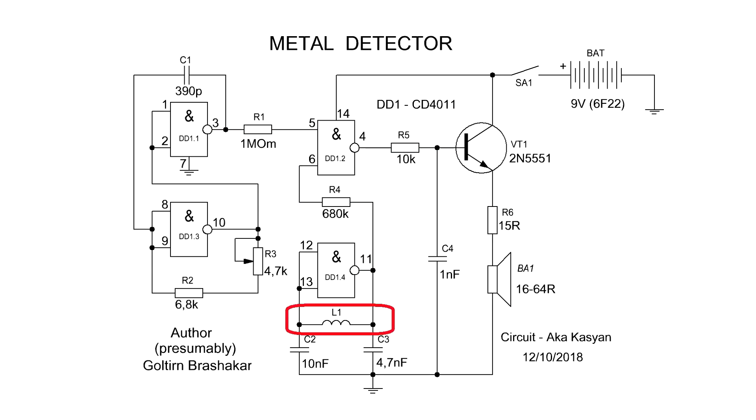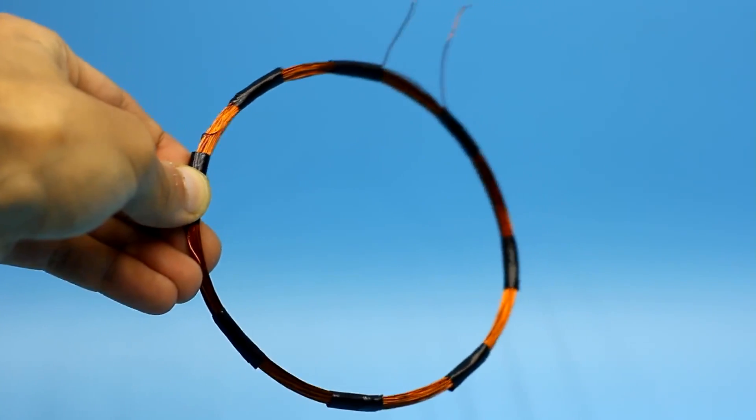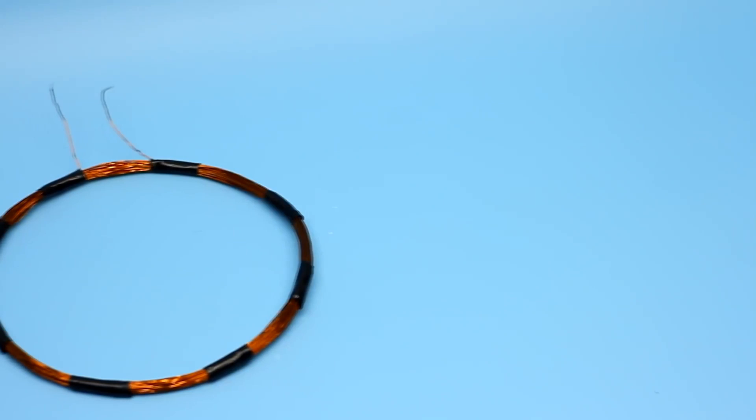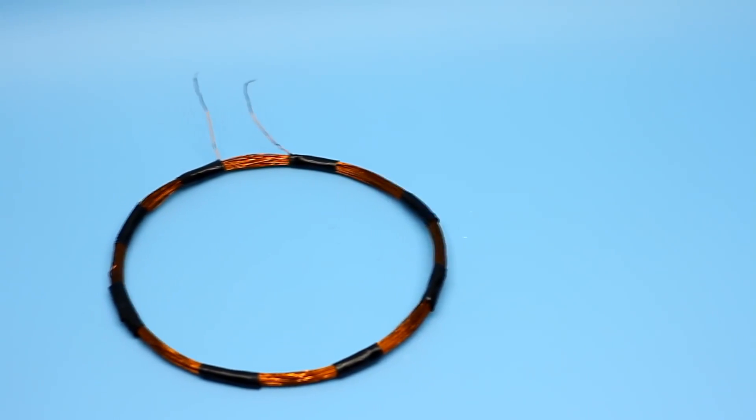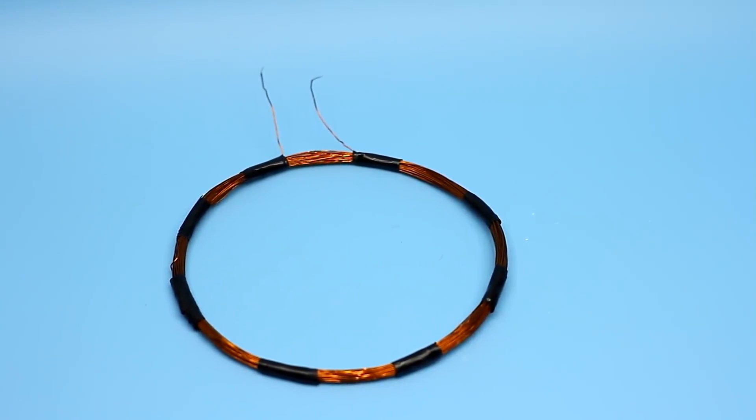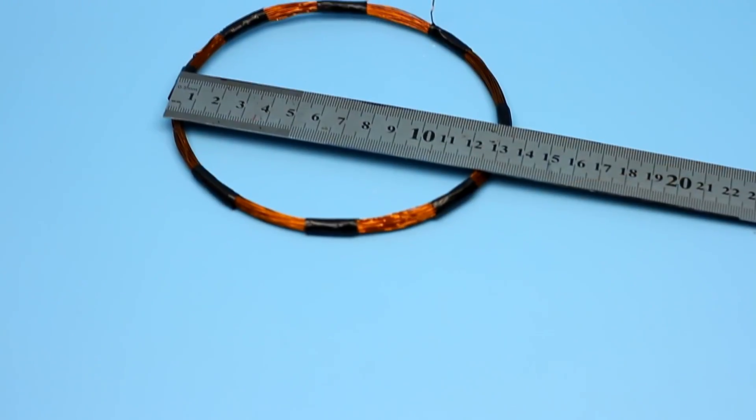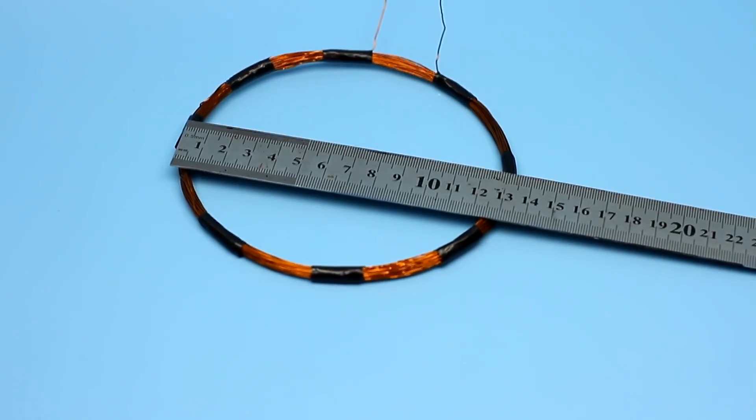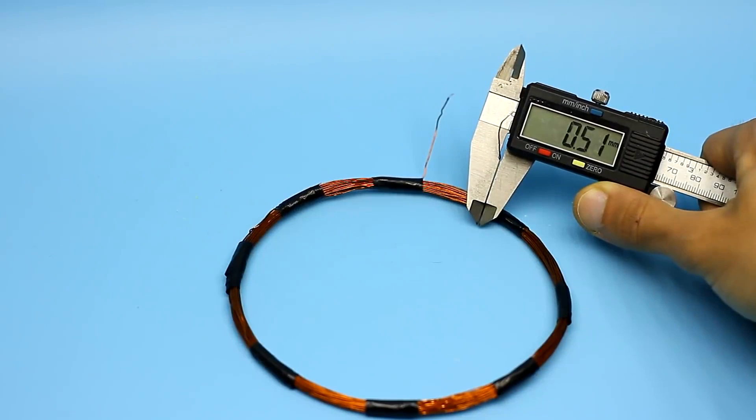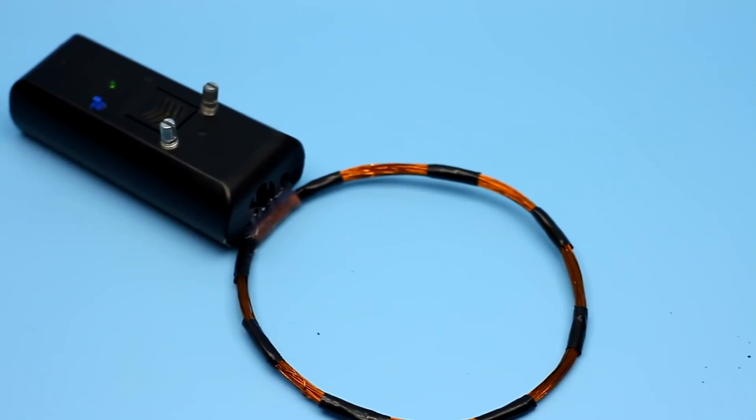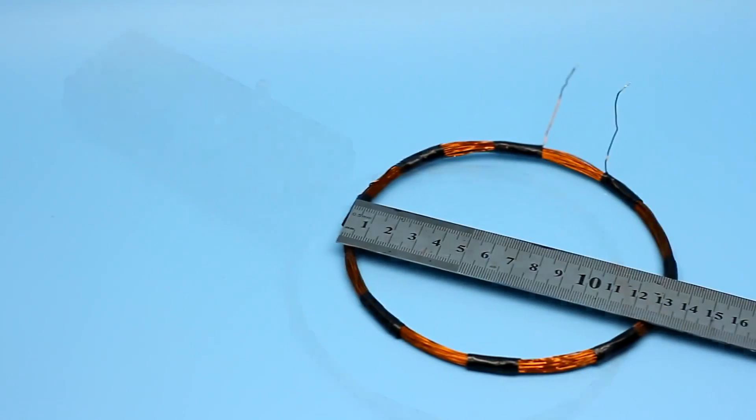I will immediately say about the size of the coil. The larger the diameter of the coil, the more sensitive the metal detector. But big coils have their drawbacks, so you need to choose the optimal parameters. For this circuit, the most optimal diameter ranges from 15 to 20 cm. The wire diameter is 0.4 to 0.6 mm. The number of turns is 40 to 50 if the diameter of the coil is within 20 cm.